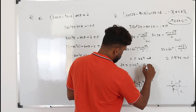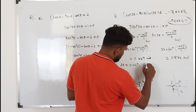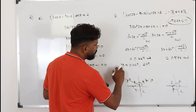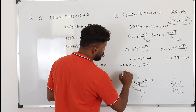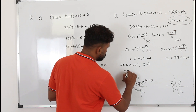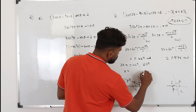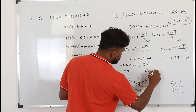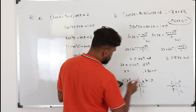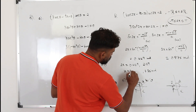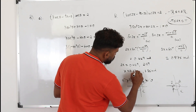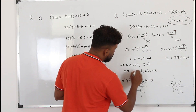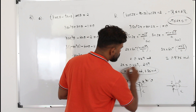Dividing everything by 2 gives x equals 1.35 radians and x equals 0.225 radians. We have found two solutions from the first equation.